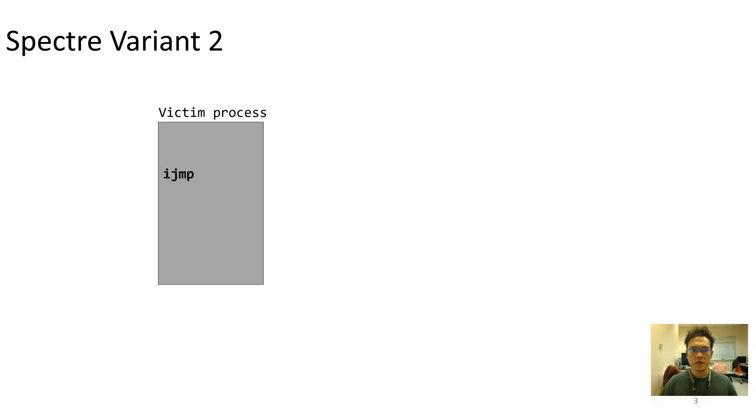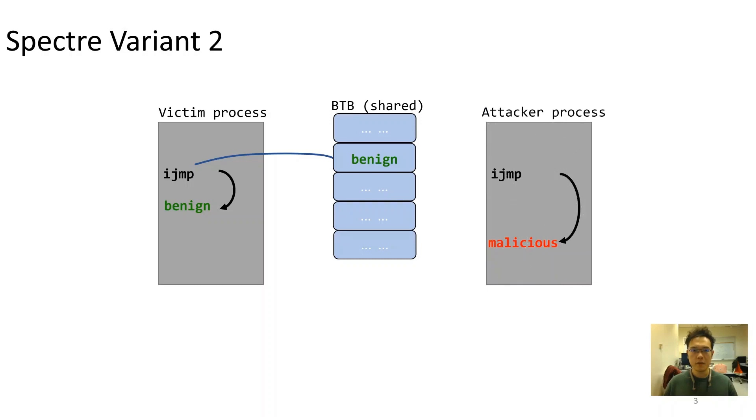Here we show how Spectre 1 and 2 uses indirect branches for such attacks. Inside CPU, targets of indirect branches are predicted using a structure called branch target buffer, or BTB. BTB caches branch targets for later uses. In nearly all today's processors, BTB is shared.